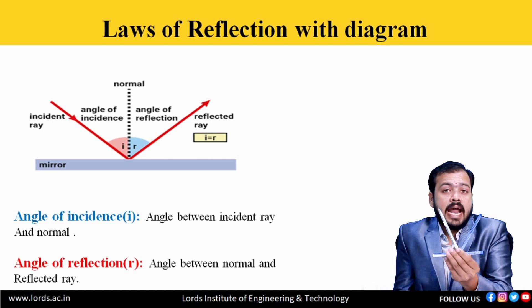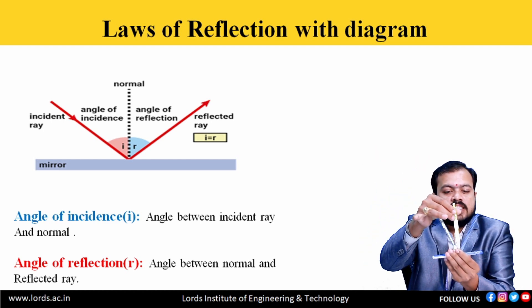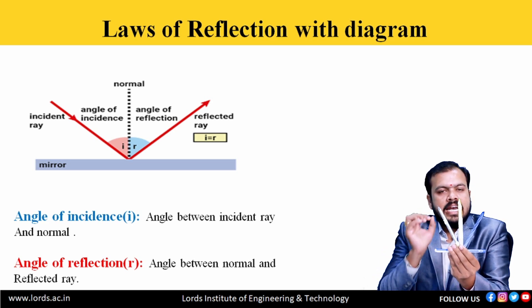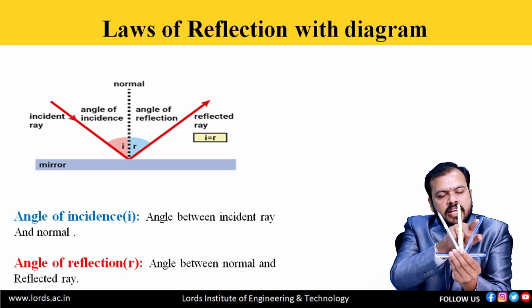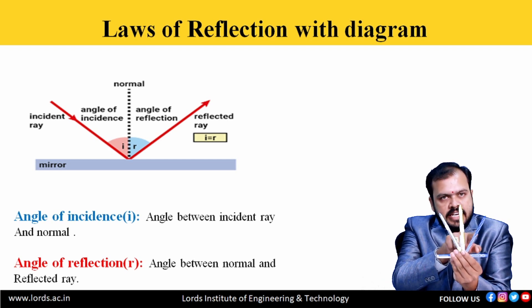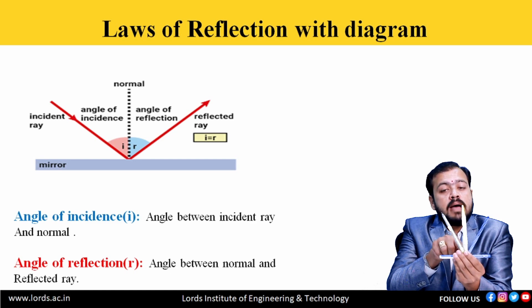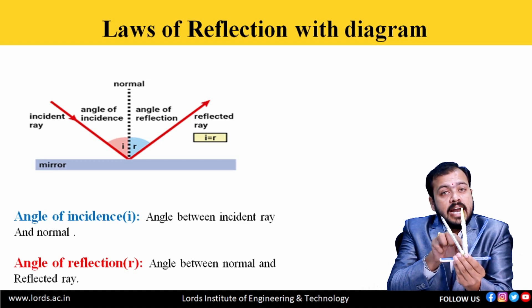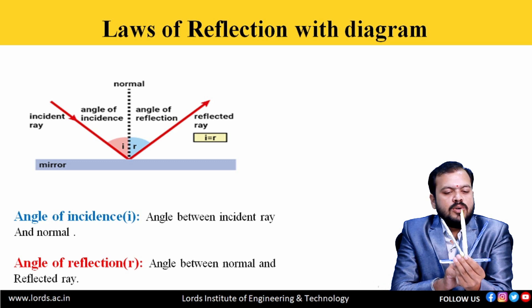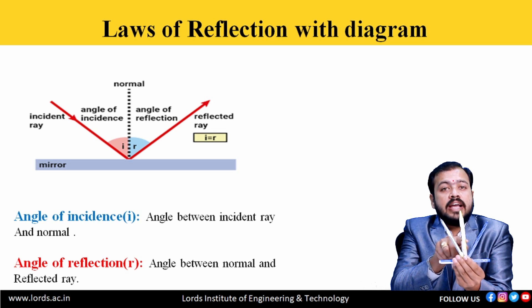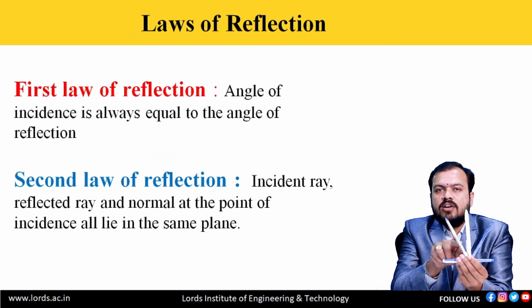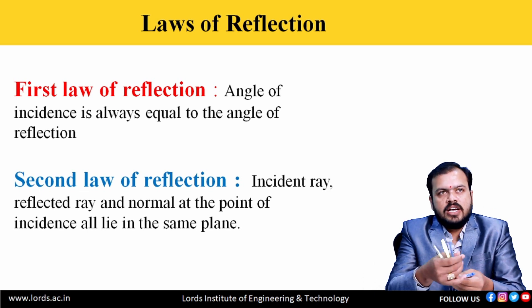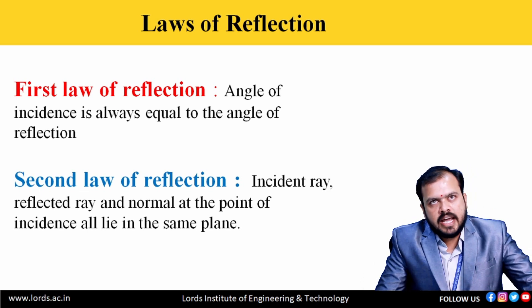Let us consider we have taken a mirror. When a ray of light is incident on the surface, that we can call as an incident ray, and it bounces back into the same medium after striking the reflecting surface — that we can call as a reflected ray. If we draw a perpendicular at the point of incidence, that we can call as a normal. The angle between incident ray and normal is the angle of incidence I, and the angle between normal and reflected ray is the angle of reflection R.